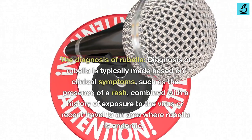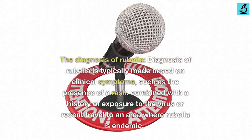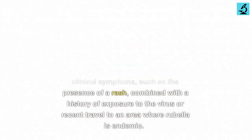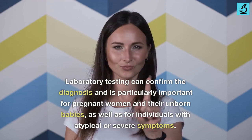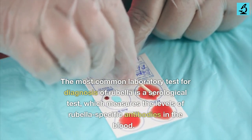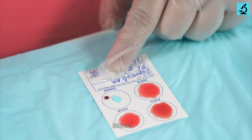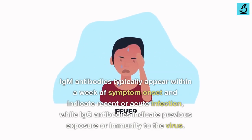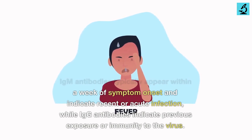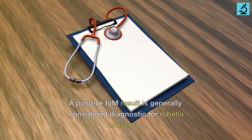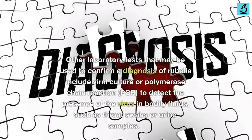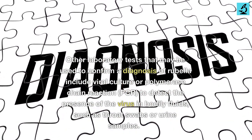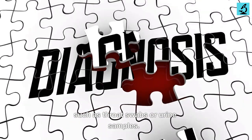The diagnosis of rubella. Diagnosis of rubella is typically made based on clinical symptoms, such as the presence of a rash, combined with a history of exposure to the virus or recent travel to an area where rubella is endemic. Laboratory testing can confirm the diagnosis and is particularly important for pregnant women and their unborn babies, as well as for individuals with atypical or severe symptoms. The most common laboratory test is a serological test, which measures the levels of rubella-specific antibodies in the blood. IgM antibodies typically appear within a week of symptom onset and indicate recent or acute infection, while IgG antibodies indicate previous exposure or immunity to the virus. A positive IgM result is generally considered diagnostic for rubella infection. Other tests may include viral culture or polymerase chain reaction (PCR) to detect the presence of the virus in bodily fluids, such as throat swabs or urine samples.